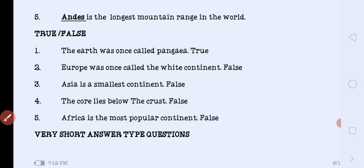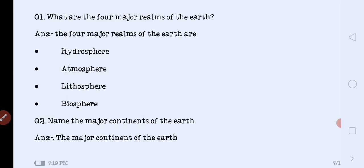Next is our very short answer type question. First one is what are the four major realms of the earth? The four major realms of the earth are hydrosphere, atmosphere, lithosphere, and biosphere.